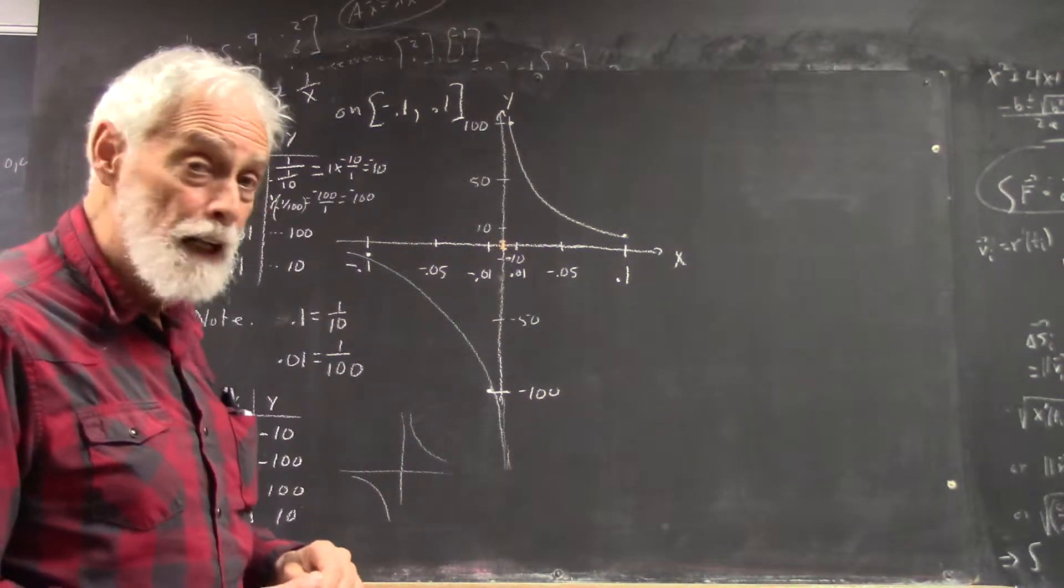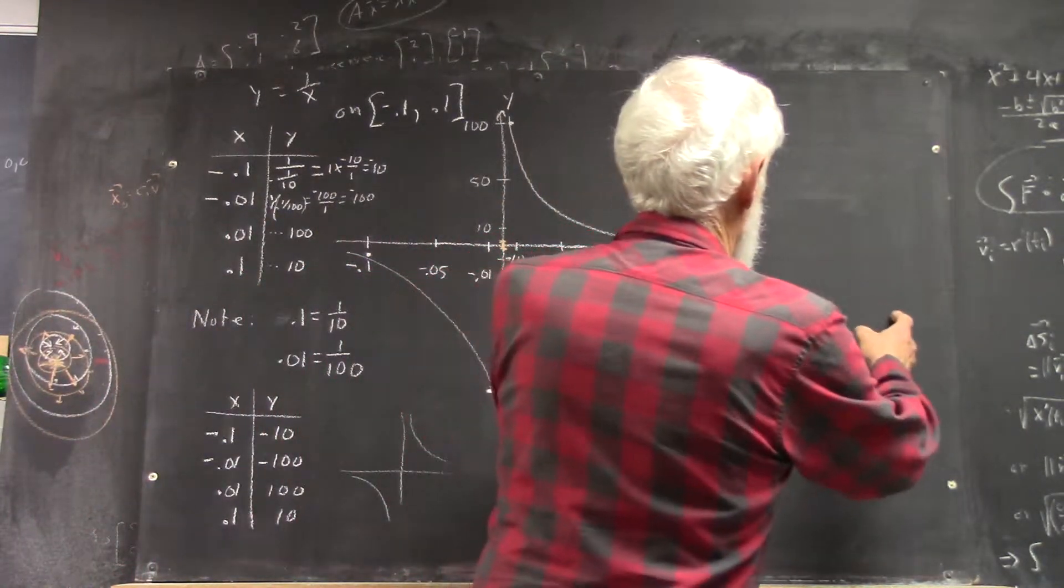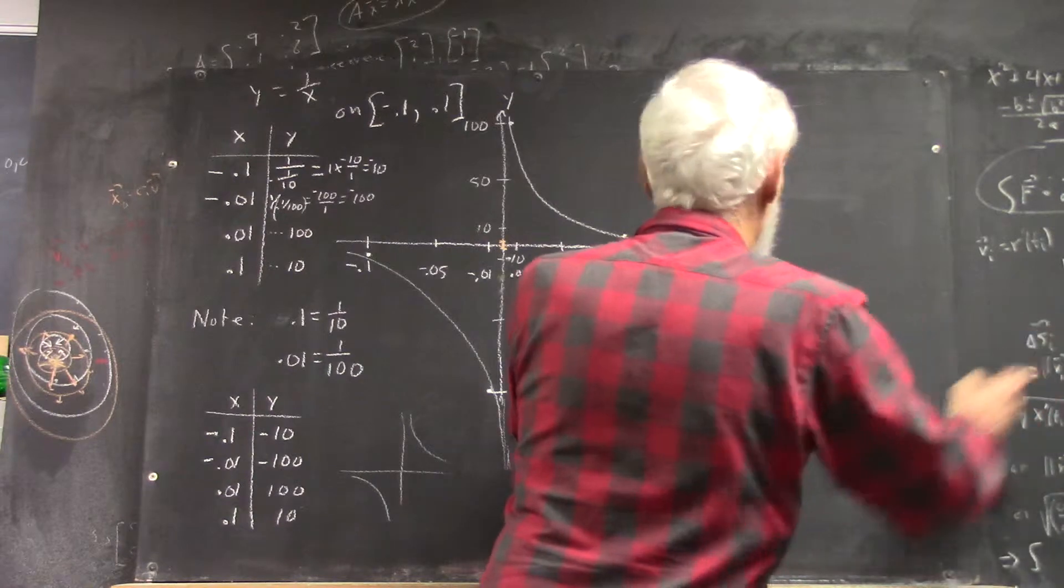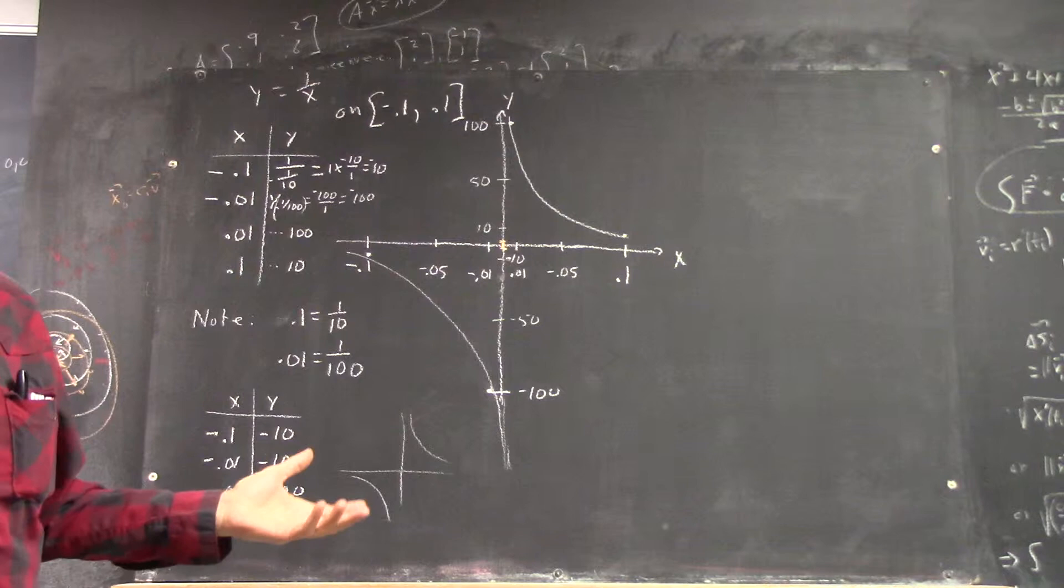Now, at 1/2, and we couldn't even get 1/2 in this graph. There's 0.1, 0.2, 0.3, 0.4 goes off the graph. 0.5 is right about there. The value of the function is 2, right?